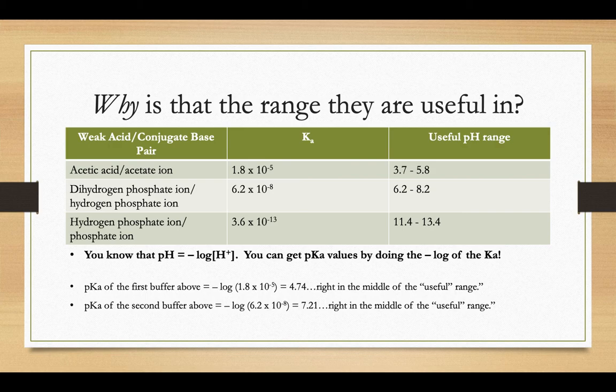So if we did the pKa of the second buffer, it would do the negative log of 6.2 times 10 to the negative eighth, 7.21, that's right in the middle of that useful range. So it could go anywhere from 6.2 to 8.2. That second buffer is a good choice.